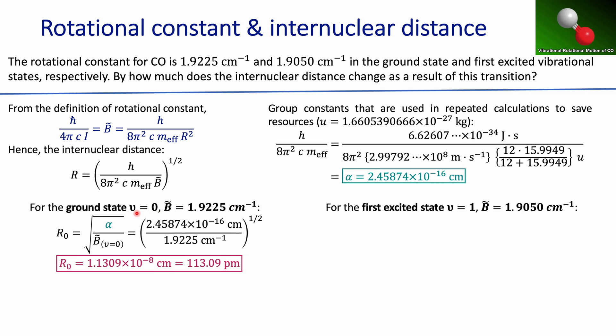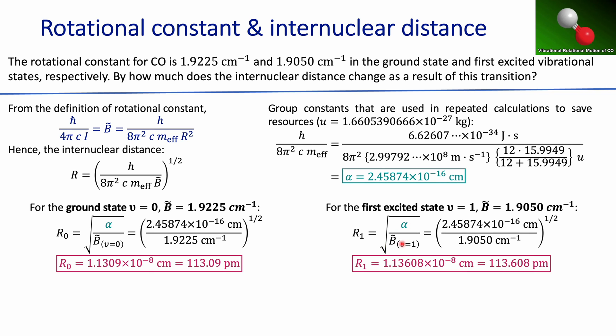I'm going to use alpha by substituting into the equation with the corresponding rotational constant for the ground vibrational state. Using the corresponding values, I calculate that the internuclear distance for that particular vibrational state is roughly 113.1 picometers.